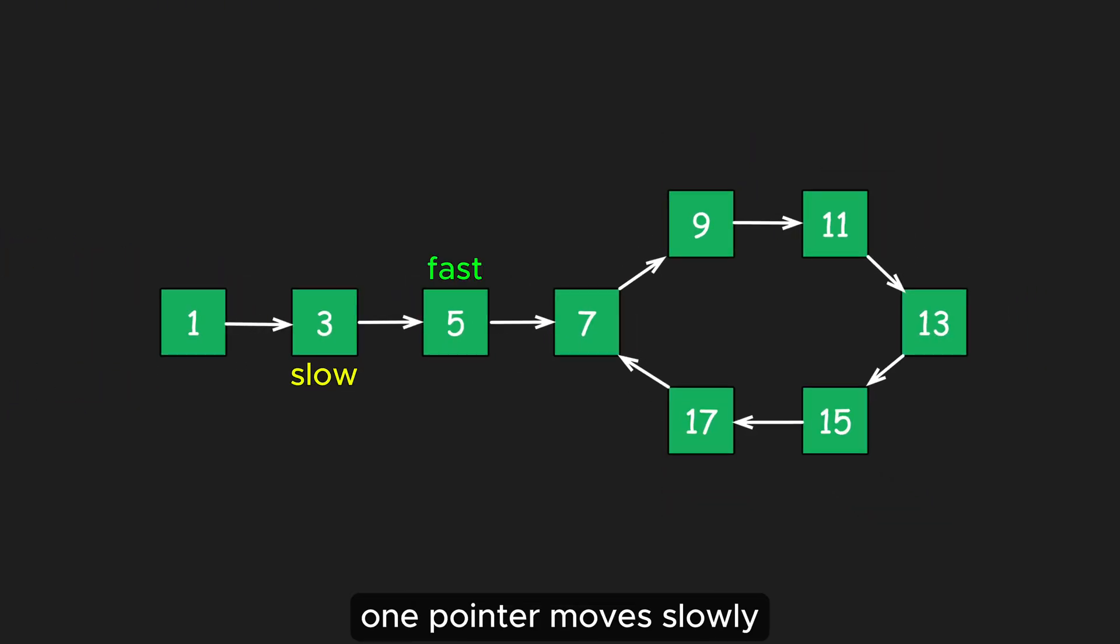It uses two pointers. One pointer moves slowly, while the other moves faster. If there is a cycle in the data structure, both pointers will eventually enter the cycle. Then, the fast pointer will catch up to and pass the slower one.